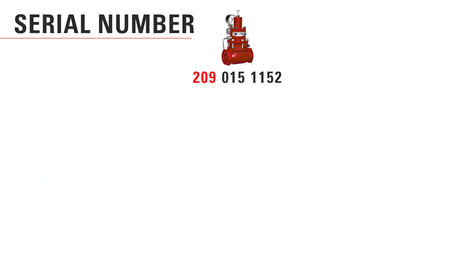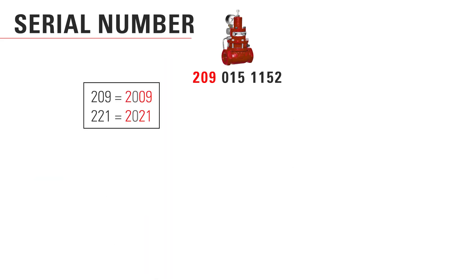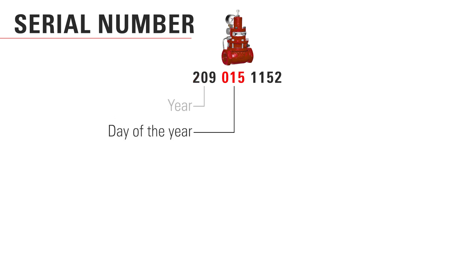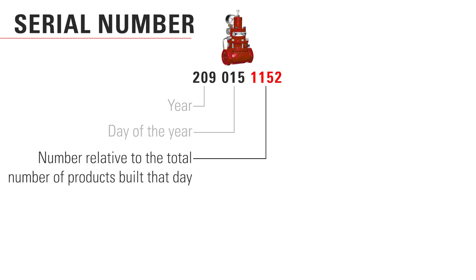The first three numbers of the serial number stand for the year — 209 means 2009, and 221 would be 2021. The following three numbers are the day of that year that it was made, and the third set of numbers is the number relative to the total number of products built that day.